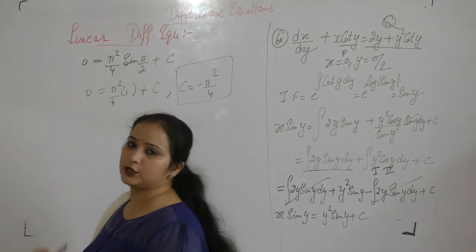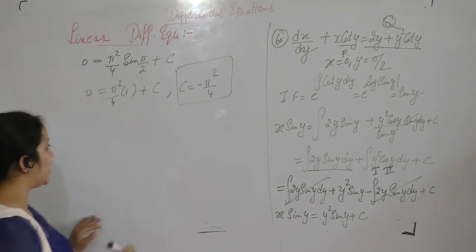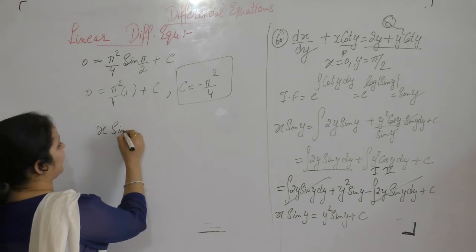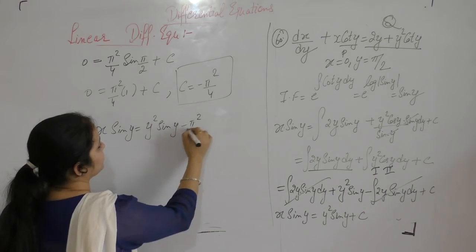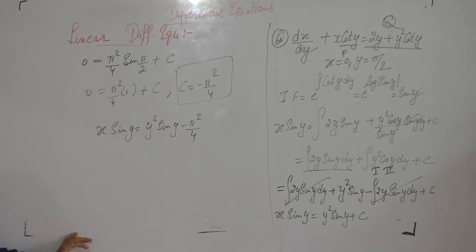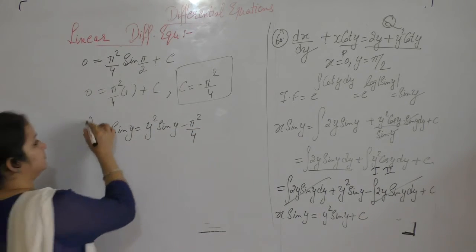Put the value of c in the equation now. So x sin y equals y square sin y minus π squared by 4. Alright. Thank you.